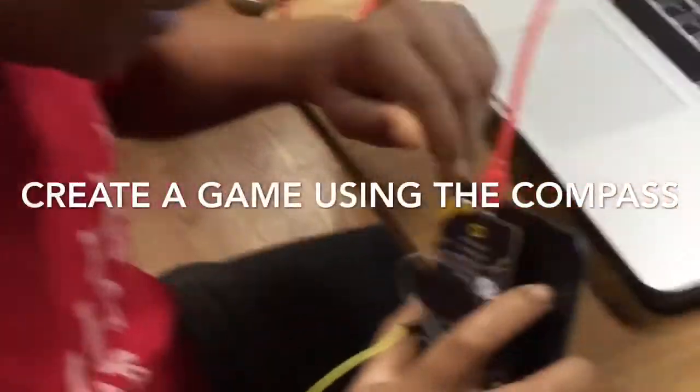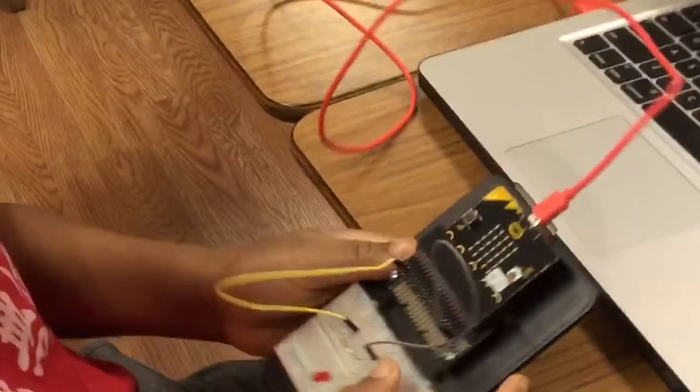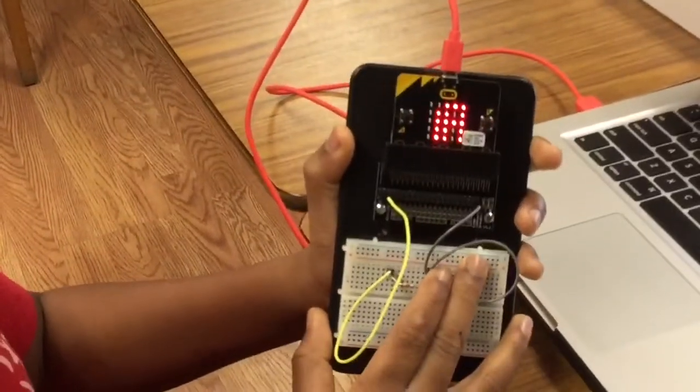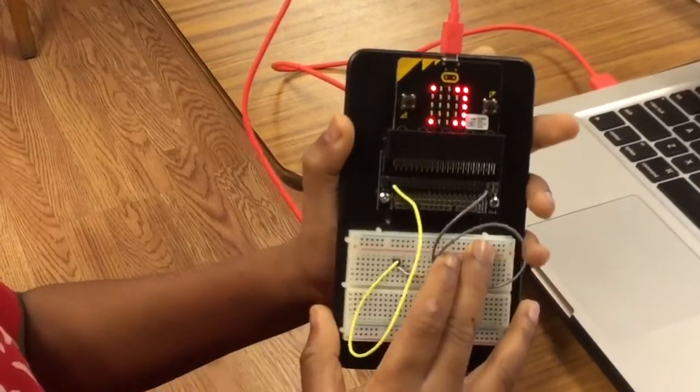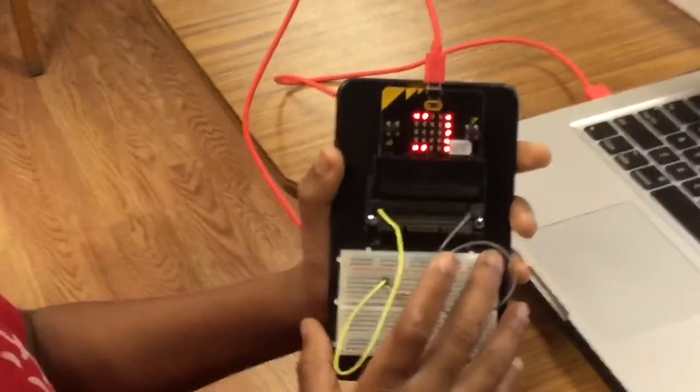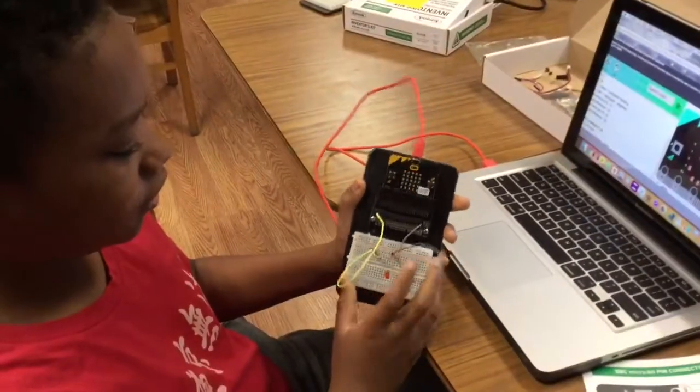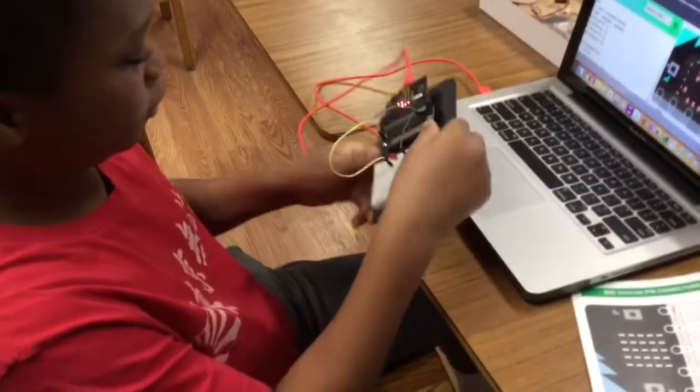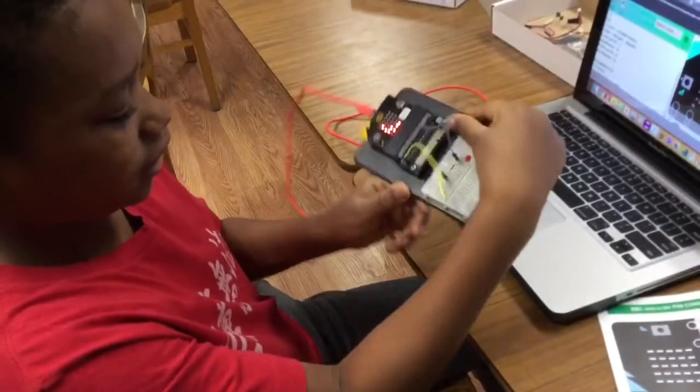It's downloading. Hey, it's done. Now it says draw a circle, and once it's done, we have to tilt this to make a circle with the LEDs.